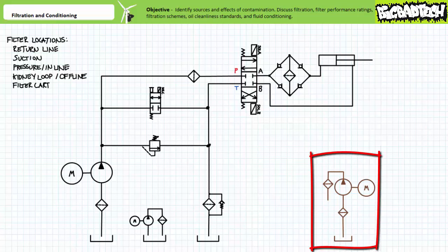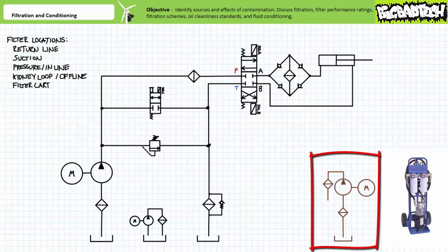Finally, filtration can occur external to a system with the use of something called a filter cart. A filter cart or portable filtration unit is a special purpose device used to transfer fluid from a storage container to a reservoir, as well as perform thorough filtration that would ordinarily be cost prohibitive if included in a regular system. A filter cart is essentially a portable pump and a filter or filters. A filter cart can be used to fill a new system, empty an old system, change old fluid or filter existing fluid.